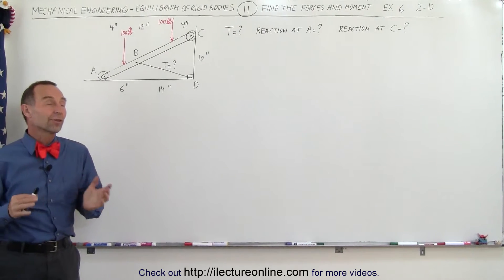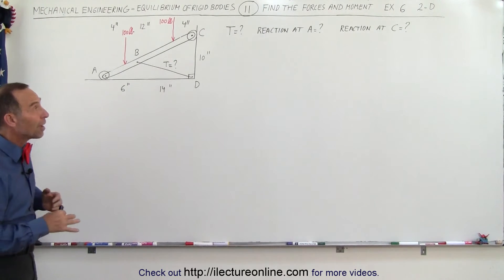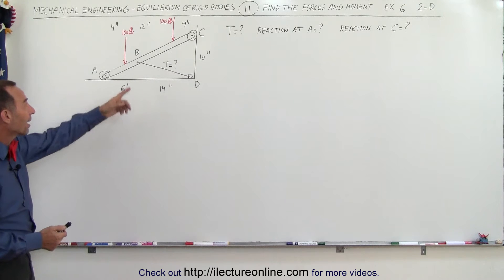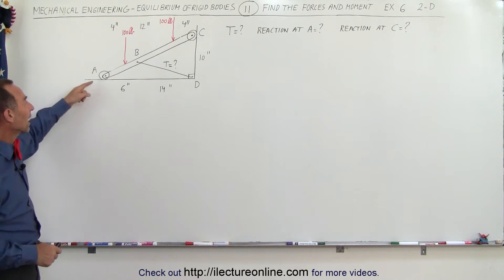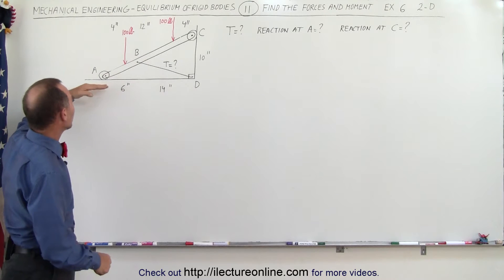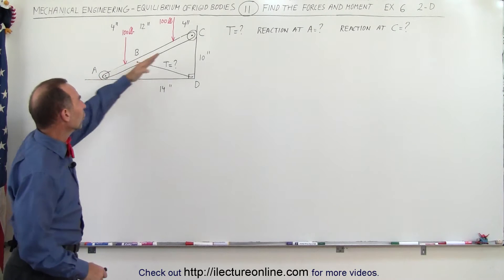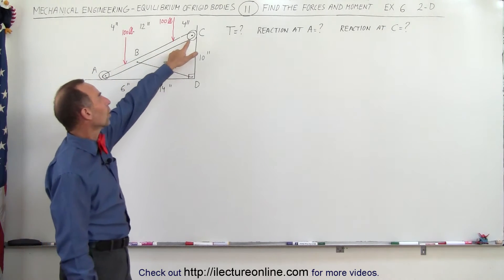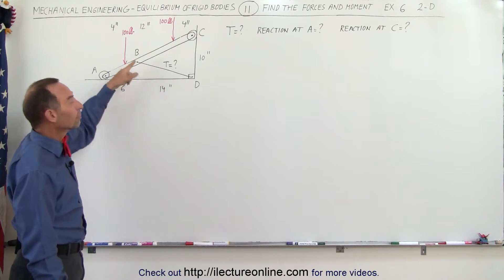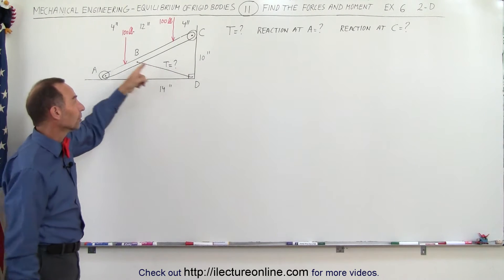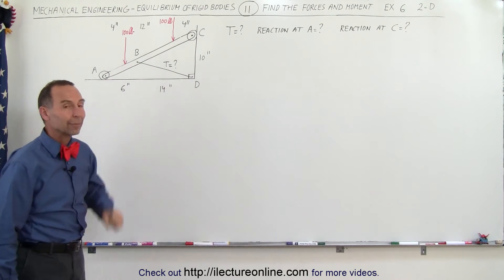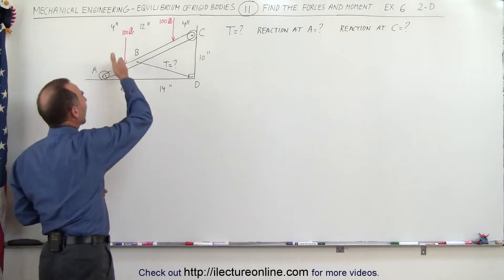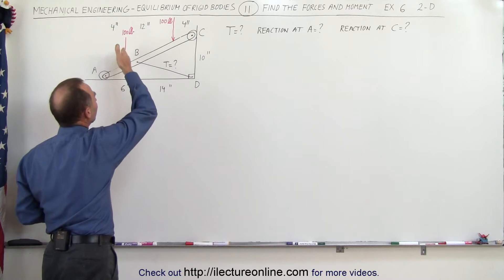Welcome to our lecture online. Here's another example of how to find the forces, the moments, and the reactionary forces on a situation like this. Notice we have a beam that's angled between the floor and the wall. It's making contact on the floor with a wheel, making contact on the wall with a wheel, and it's held in place by a cable. There are two forces, each of 100 pounds, acting on the beam vertically.